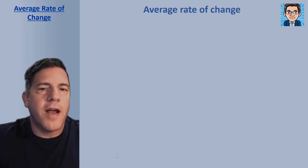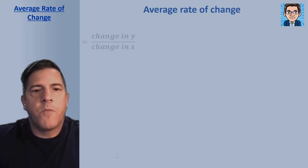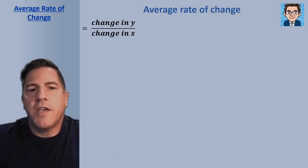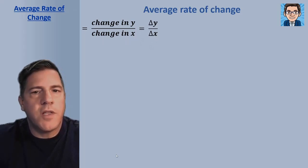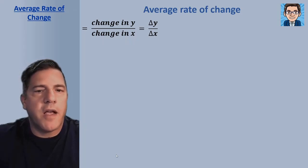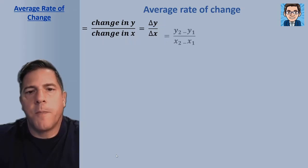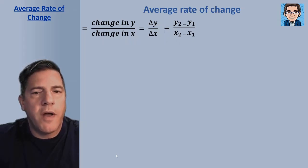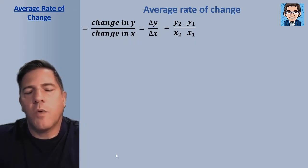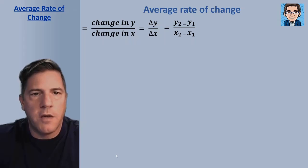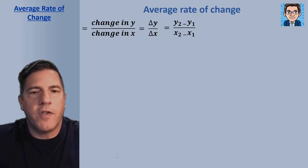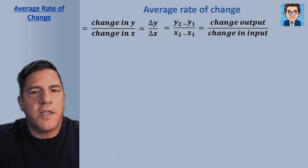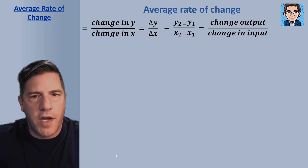The average rate of change is the change in y divided by the change in x. Sometimes you'll see that written as delta y over delta x, which just means change. Or you can see it as y2 minus y1 over x2 minus x1. So if you have the xy coordinates, we find the change in y by subtracting the two y's and the change in x by subtracting the two x's. You might also see it as the change in output divided by the change in input.